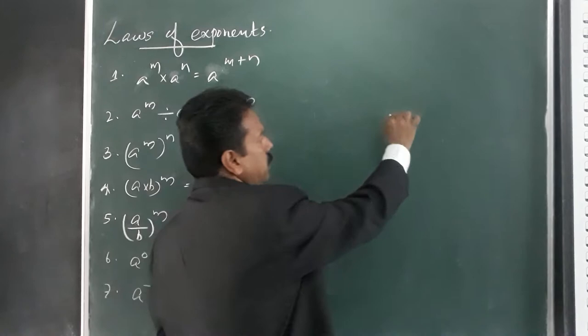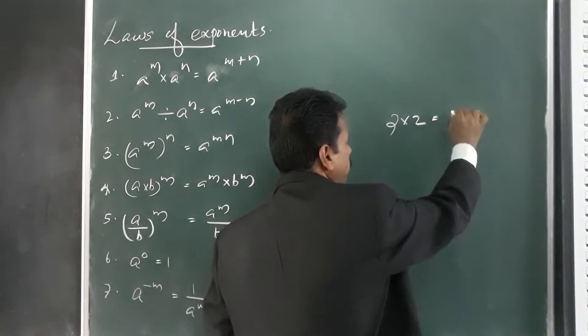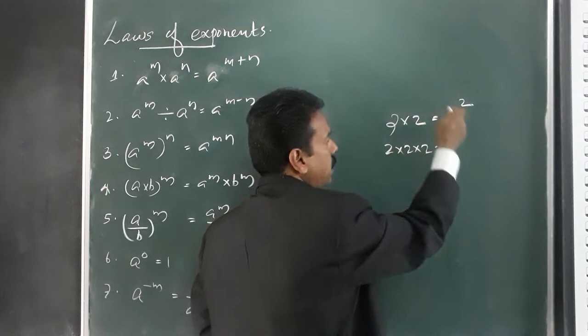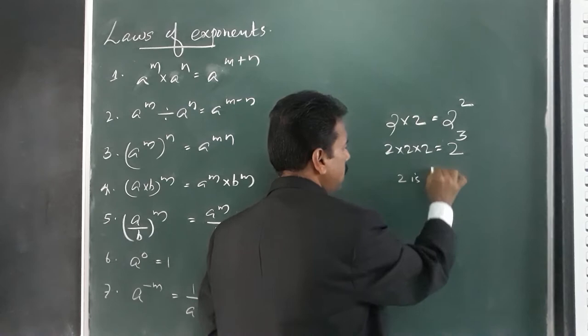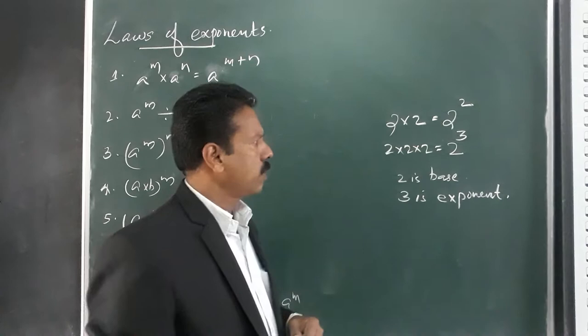Take the number two — you can write two times two times two. The short form is two raised to the power of three. How many twos are there? Three twos — so you write two raised to the power of three. Here two is the base and three is the exponent.